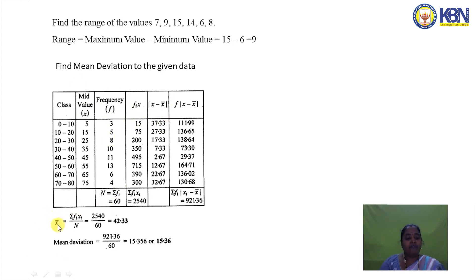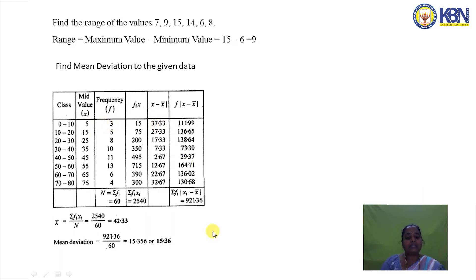Using Σfxi, we calculate the mean: x̄ = Σfxi / N. Here Σfxi = 2540 and N = 60, giving x̄ = 42.33. We then compute |xi − x̄| for each mid value and multiply by the frequency to get fi|xi − x̄|. The mean deviation = Σfi|xi − x̄| / N = 921.36 / 60 = 15.36.